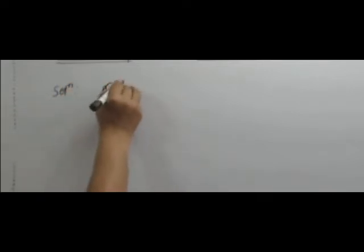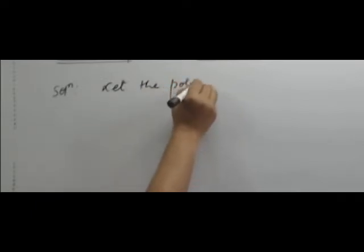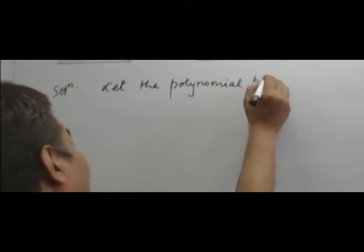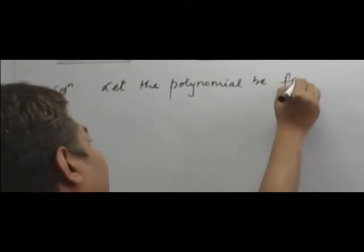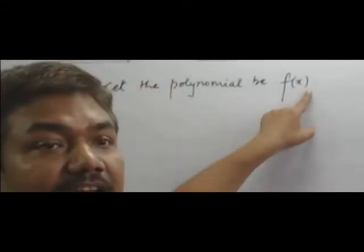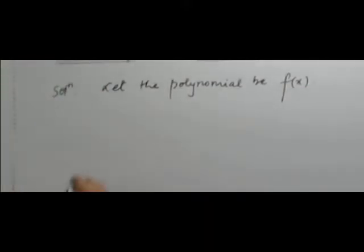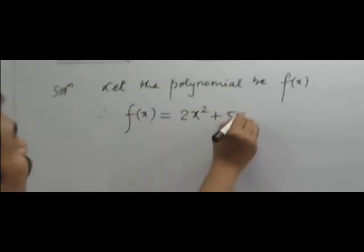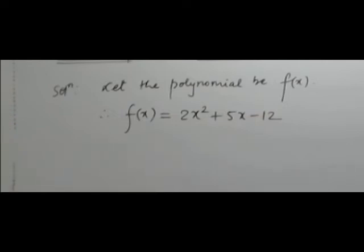Solution: let the polynomial be f(x). मान लेते हैं कि जो भी यह polynomial दिया गया है वो f(x) के द्वारा represent किया जाएगा। इसलिए यहाँ पर f(x) का value लिखा जाएगा: 2x² + 5x - 12. अब क्योंकि हमें इसको factorize पहले कर लेना चाहिए — यह quadratic है, तो factorize करके x का value निकलता है।